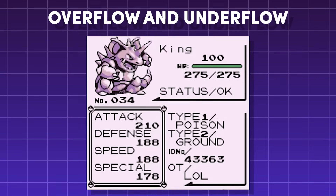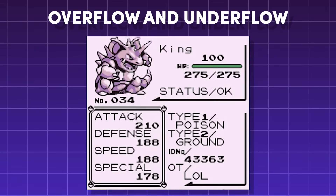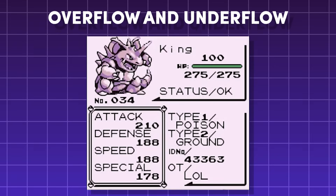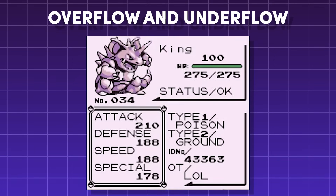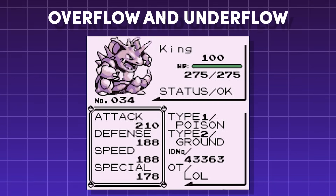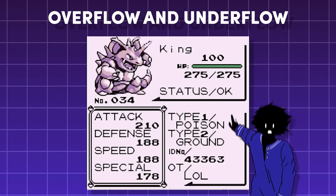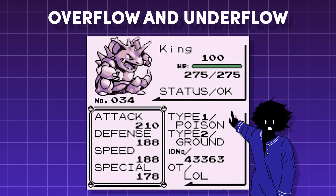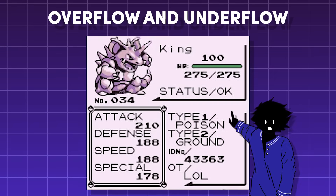Do you remember the glitch in Pokémon that allows you to get a level 100 before you even get your first badge? That glitch is caused by an underflow error.